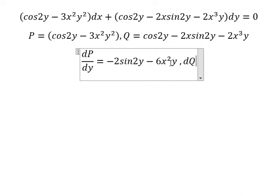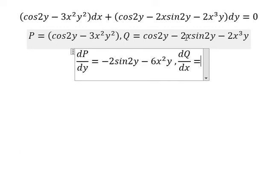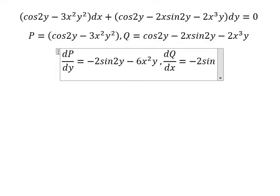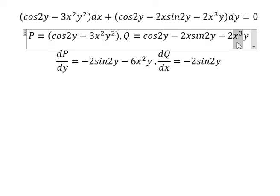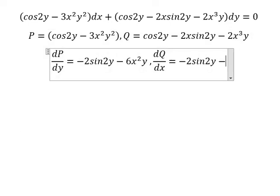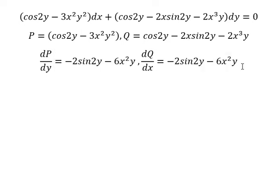Next, that is dQ over ds. We do the first derivative of s, so we have negative two sin(2y). We do the first derivative of s to the power of three — we have negative six s squared y. We see that this one equals to this one, which means this is an exact equation.